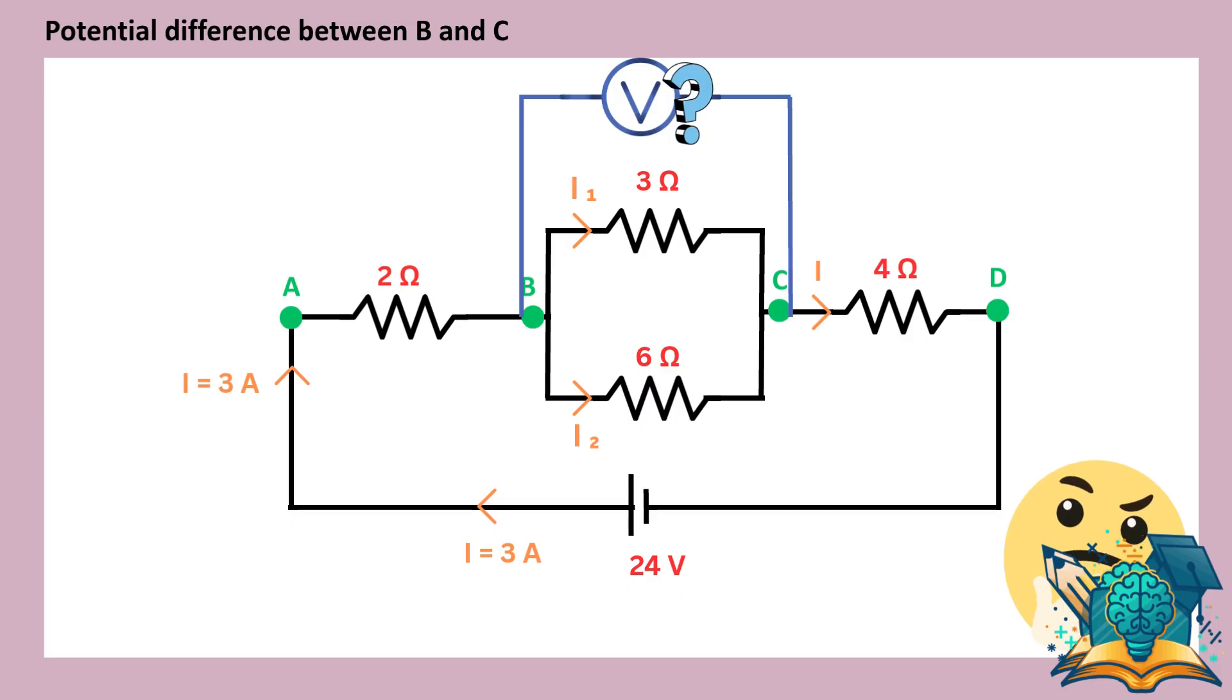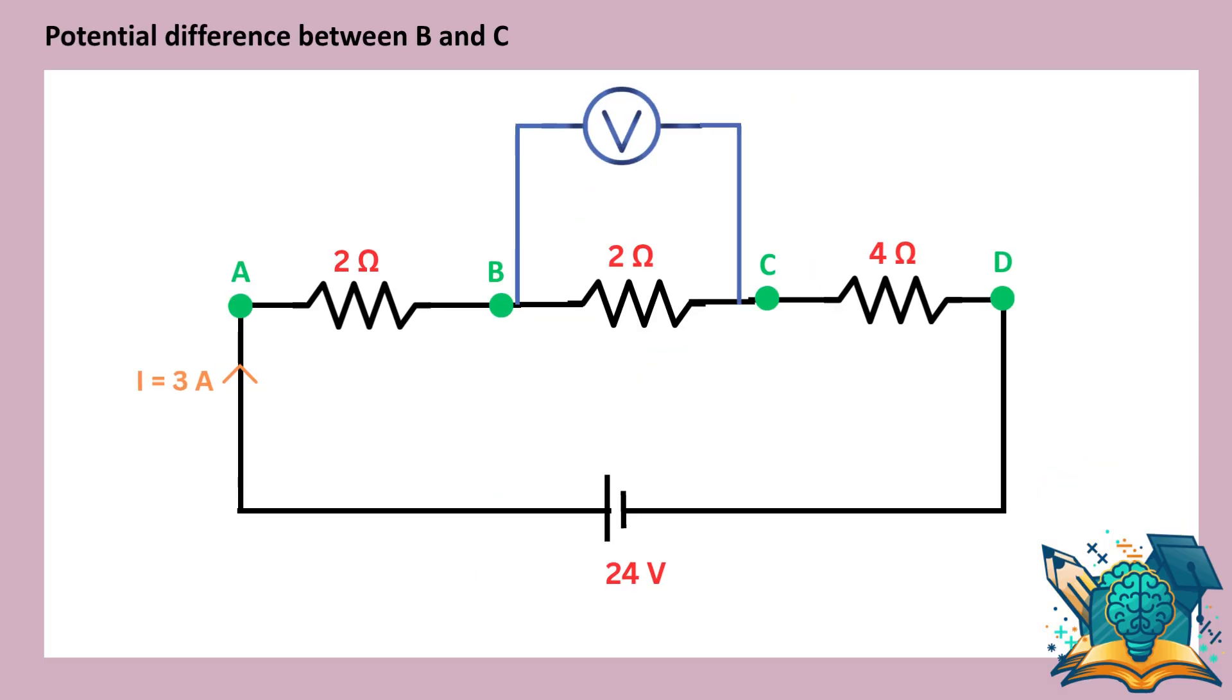To find I1 and I2, we first need to find the potential difference between points B and C. Since the 3 ohm and 6 ohm resistors are connected in parallel, they both have the same potential difference. Now that we know this, the equivalent resistance between points B and C is 2 ohms.